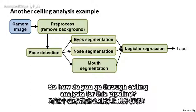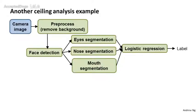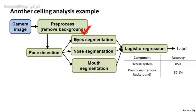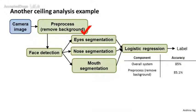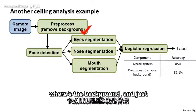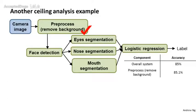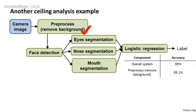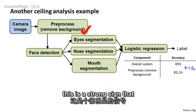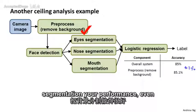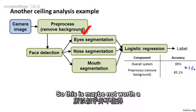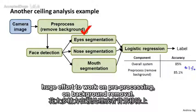How do we go through ceiling analysis for this pipeline? We step through the pieces one at a time. Let's say the overall system has 85% accuracy. The first thing to do is go to the test set and manually provide the ground truth foreground/background segmentation — use Photoshop or something to manually remove the background — and see how much accuracy changes. In this example, accuracy goes up by only 0.1%. This is a strong sign that even perfect background removal won't make a huge difference. So it's maybe not worth a huge effort to work on pre-processing and background removal.